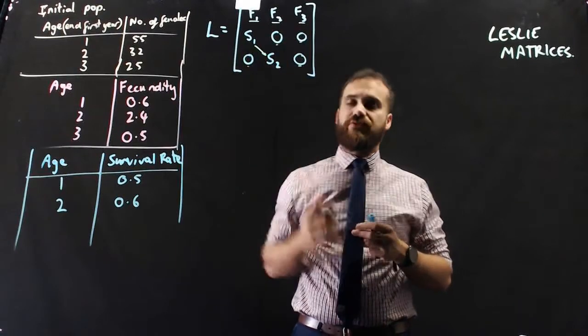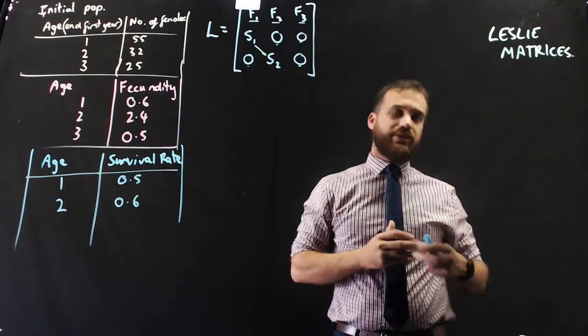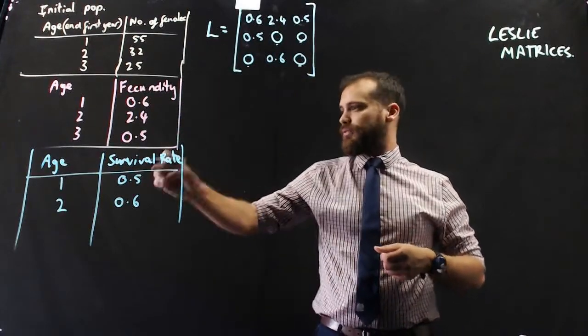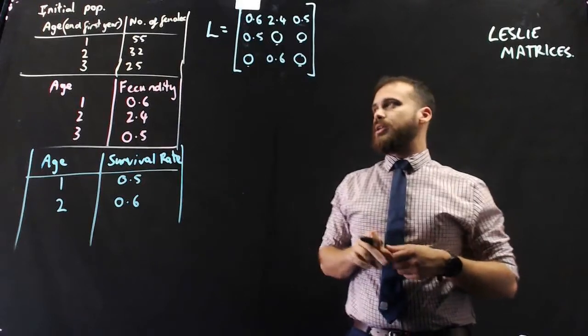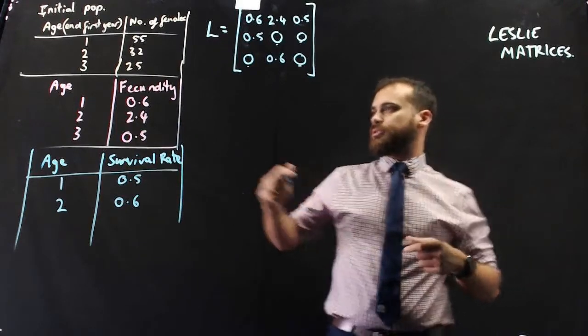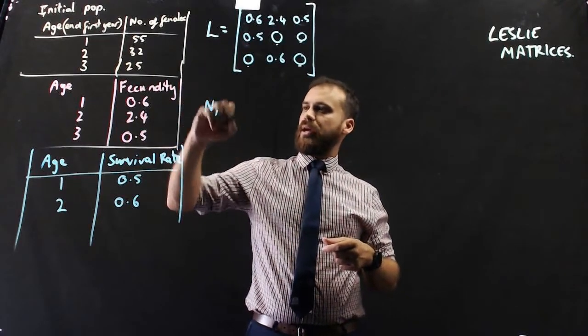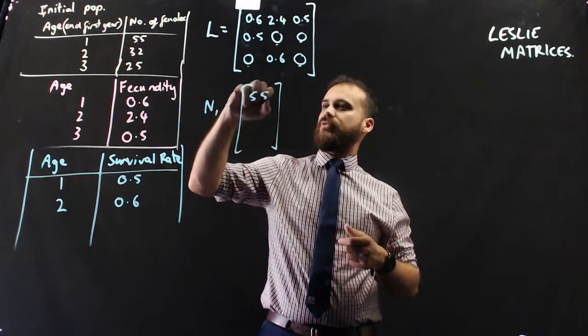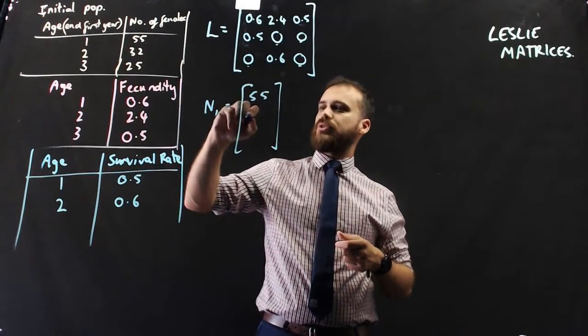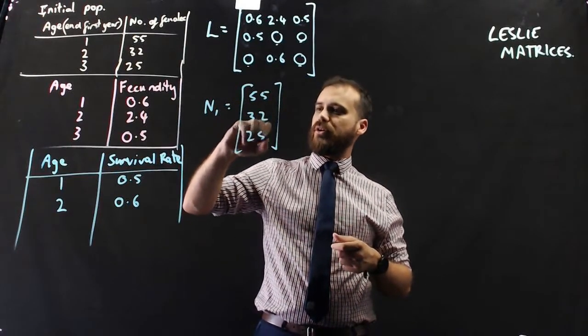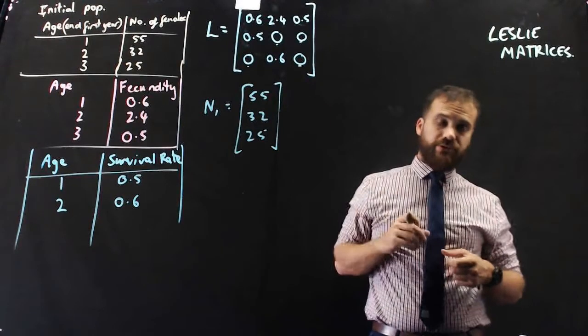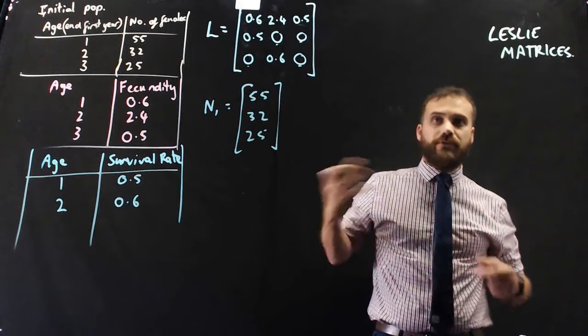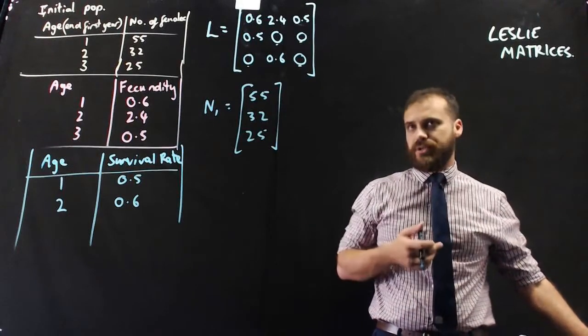We only need 1, 2, 3, 4, 5 values in our Leslie matrix. There's my Leslie matrix filled in all of my values from fecundity and filled in from survival rate. Now I just need an initial matrix, the initial population. That's 55 one-year-olds, 32 two-year-olds, and 25 three-year-olds. Now I've got these two matrices, we can do some matrix multiplication to find out populations over time.